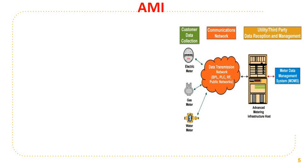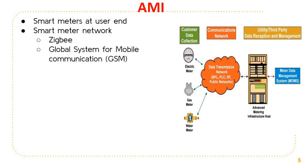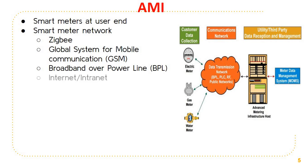Various components of AMI are smart meters at the user end, and a smart meter network to collect basic information from the smart meter. This could be using Zigbee, GSM, broadband over the power line, internet, intranet, Wi-Fi, etc.